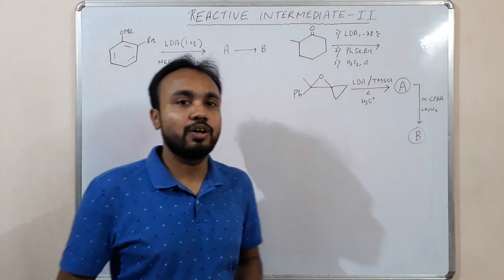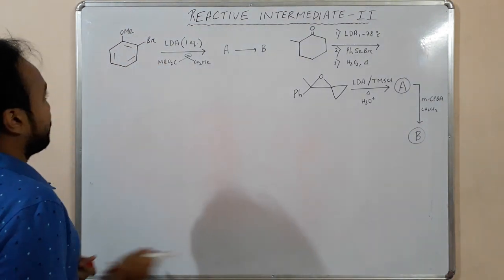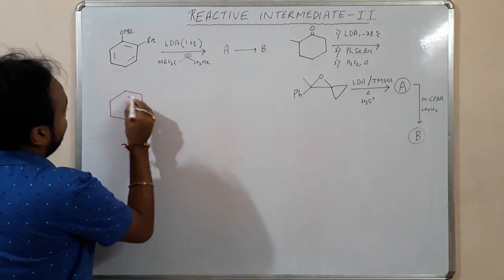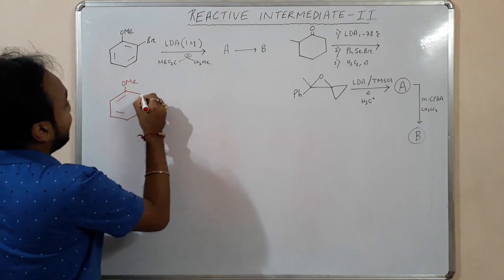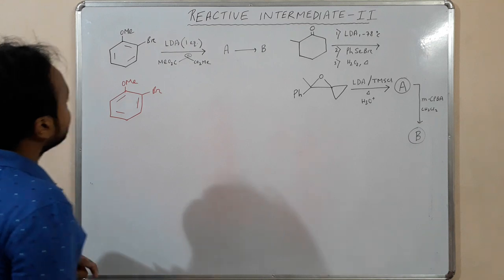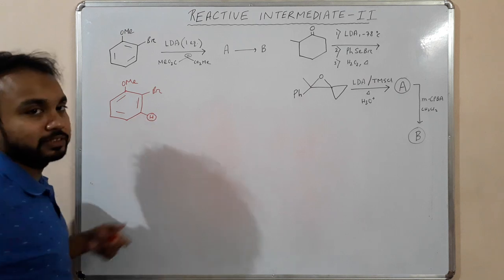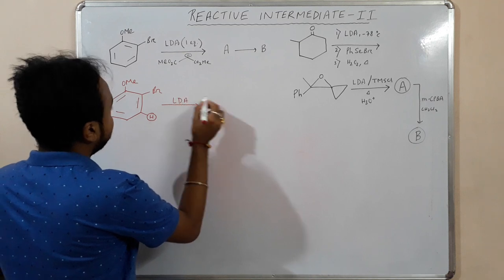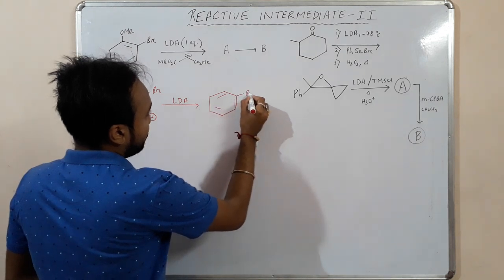Welcome friends, let's start with reactive intermediates part 2. We have given a bromo and OMe compound. LDA is given — one equivalent — so it will abstract the acidic proton. The acidic proton is this one, because it is adjacent to bromine. LDA will abstract this acidic proton.